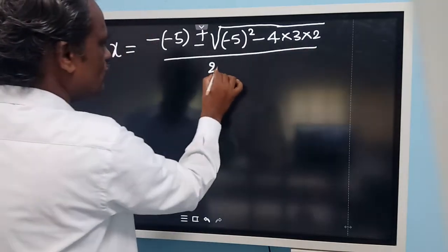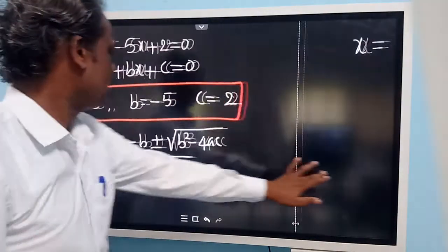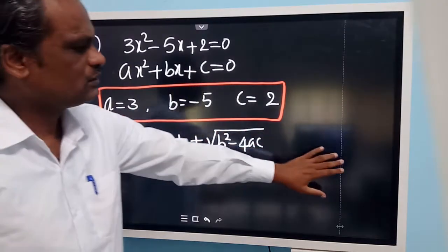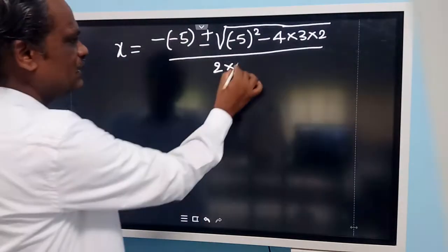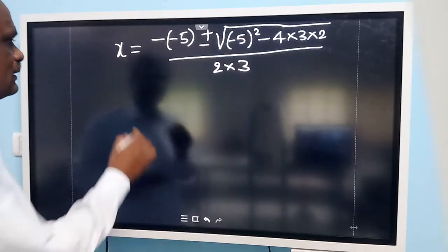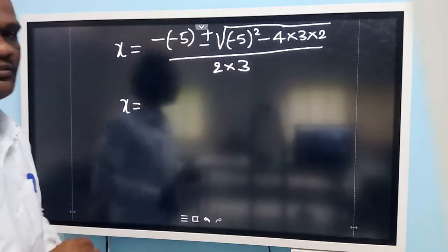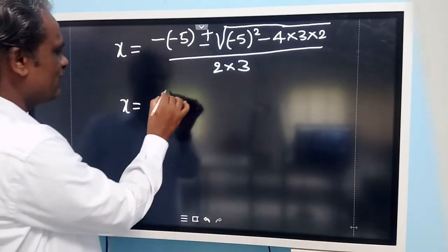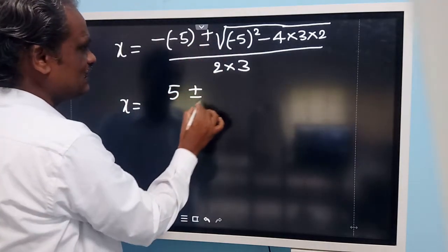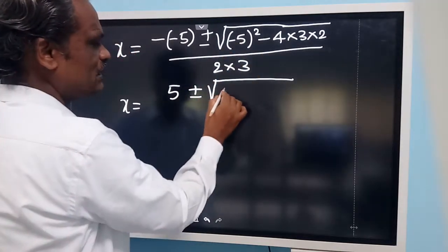Divided by 2 into a value. What is the value of a? a is equal to 3. So we substitute the value of a here, it becomes 2 into 3. Now let us simplify: minus of minus 5 gives plus 5. Then plus or minus as it is, and root of minus 5 whole squared means 25.